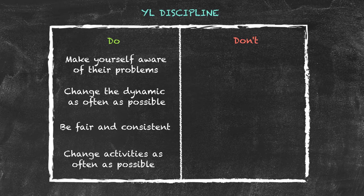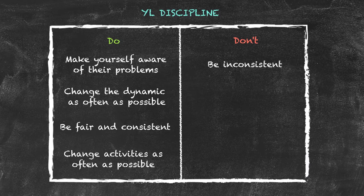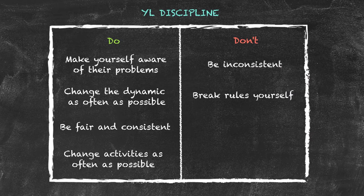Some things which can cause discipline to degrade is when you are inconsistent. Secondly, when you set out a set of rules for the students and you actually break them yourself. If you say that no one should be talking when you are talking, then you shouldn't interrupt your students in that way either.